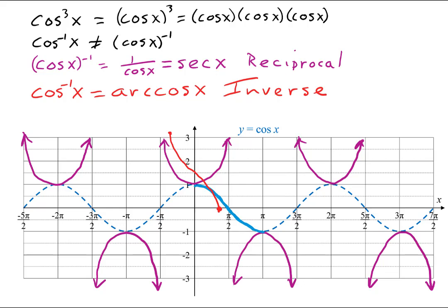The inverse cosine does not keep going. It stops right there at those dots. That's all there is to it. And it's clearly not the same as the reciprocal function.